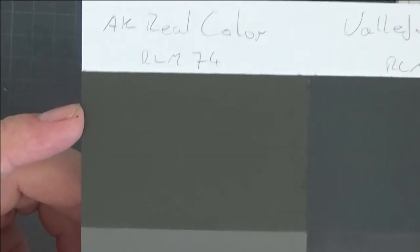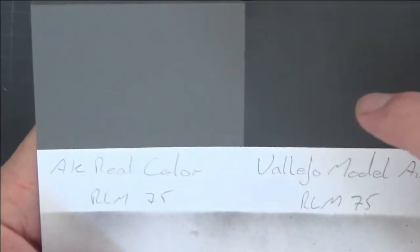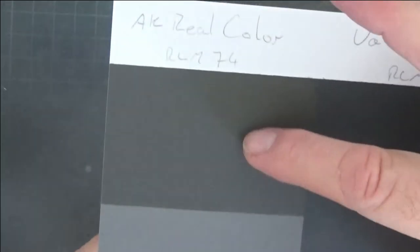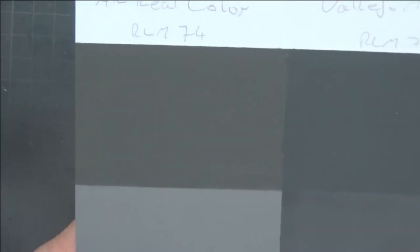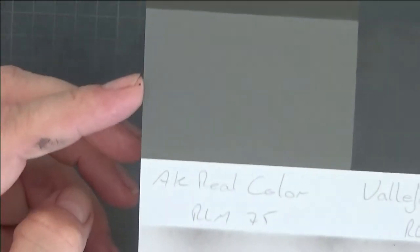You can see there's a distinct difference even on the box. I set up this little test spray today. On this side we've got the AK Real Color RLM74 and the AK Real Color RLM75. So this is RLM75 and this is RLM75. Which one's right? There's even a difference between the two 74s. To my eyes, being color blind and what I've seen on other people's models on the internet, these colors are much truer to what other people have used.